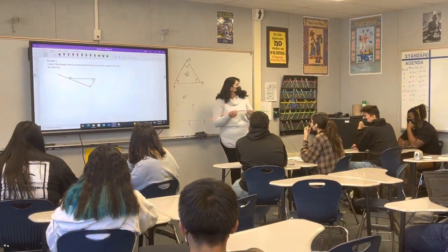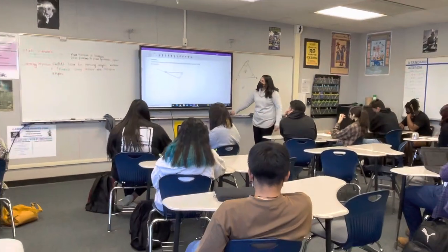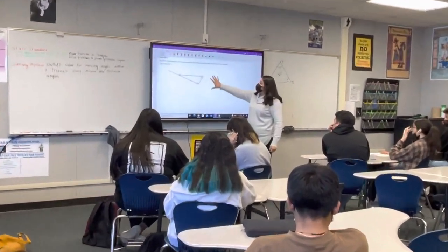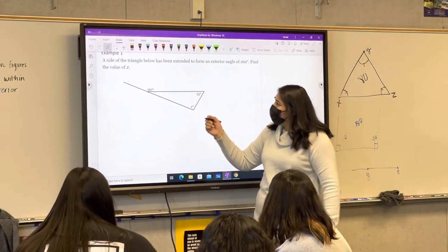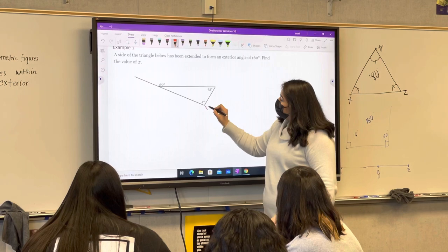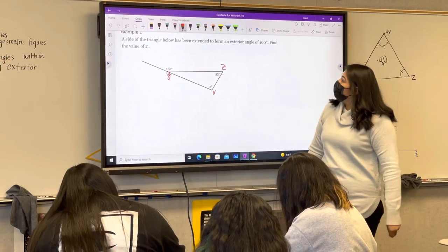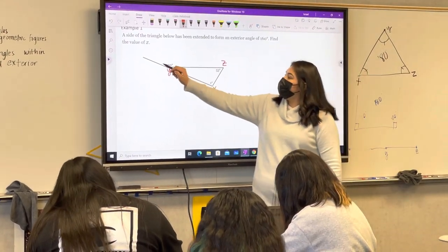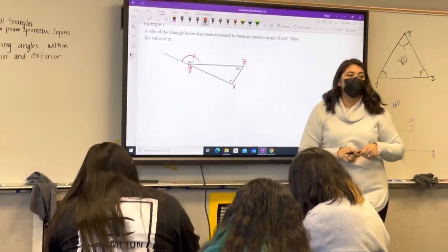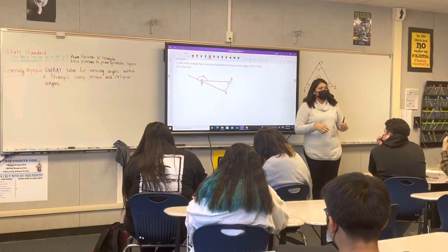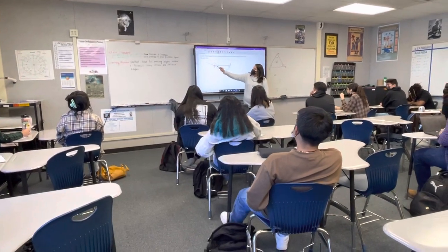Now knowing this, having this knowledge, we're going to go to example one on our sheets and begin. It says the side of the triangle below has been extended. So it's a triangle here. We're going to label our triangle X, Y, and Z. It has been extended to form an exterior angle of 160. So now we have this new term: exterior angle.